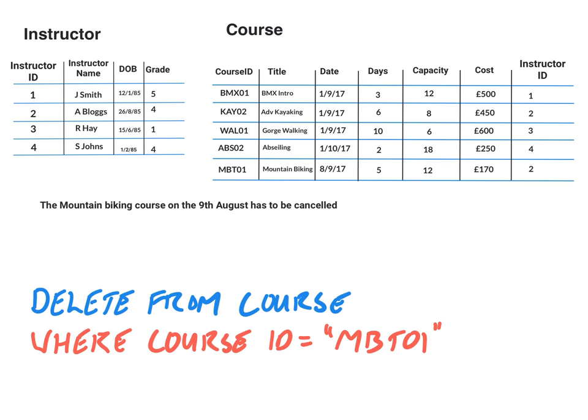The reason we chose to use the primary key, which is MBT01, is that we can ensure we are only going to delete that one specific row.